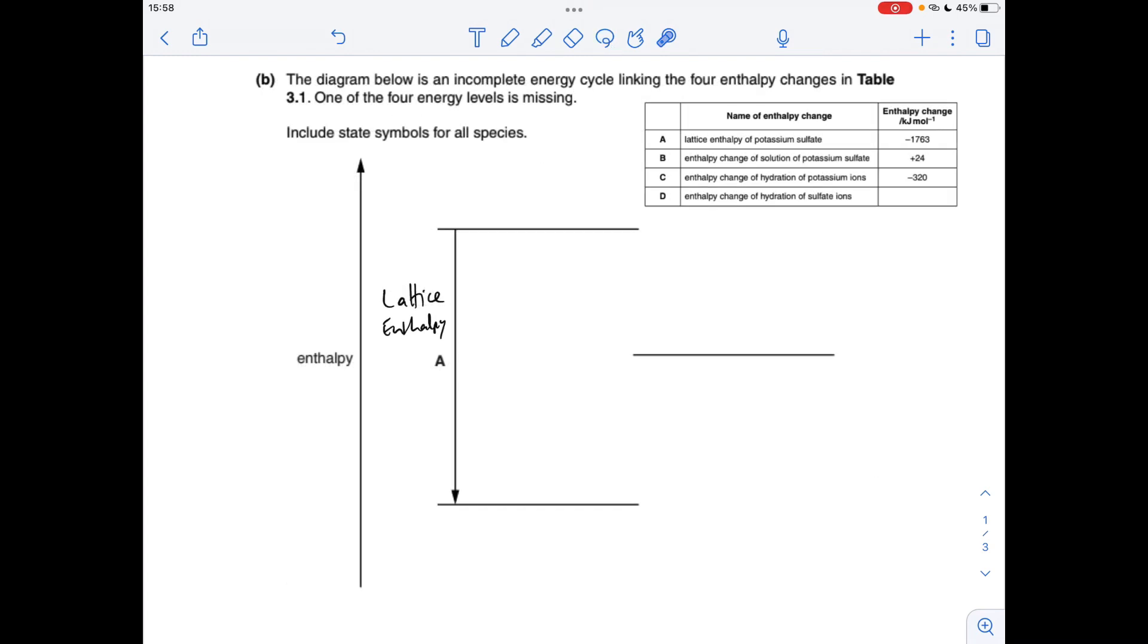Moving on to the cycle, we're told that A is the lattice enthalpy, so we've got the gaseous ions at the top there. They come together to form the solid ionic lattice, so we need the solid lattice at the bottom here.